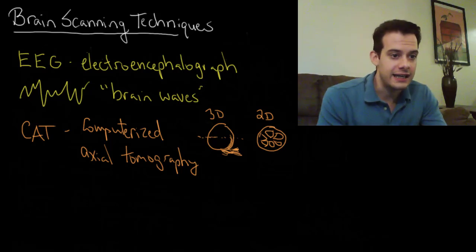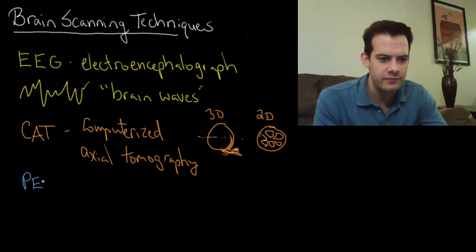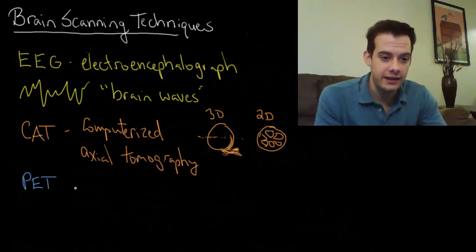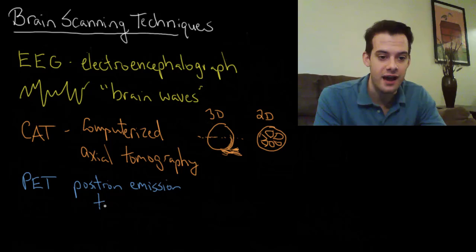The next technique that we'll look at is a PET scan. So we have a CAT scan and a PET scan. PET scan, this is a functional technique and this stands for positron emission tomography. So again we're going to be looking at a 2D slice of a 3D object.